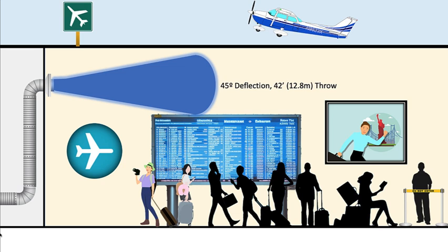Check the manufacturer's literature for correction factors to the listed performance values, as the charts can be based on isothermal conditions, 0 degrees of deflection, whether there is a ceiling, and the distance of the diffuser below the ceiling. Also affected by deflection is pressure drop. As the angle of deflection is increased, so is the pressure drop through the jet diffuser.